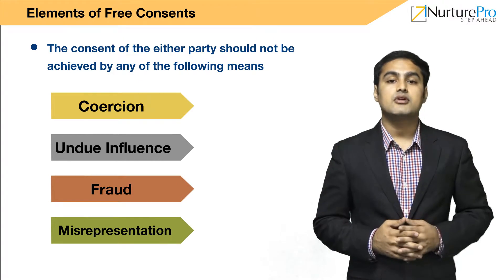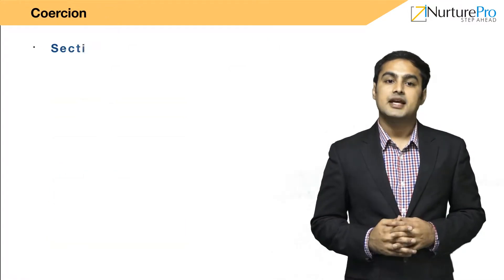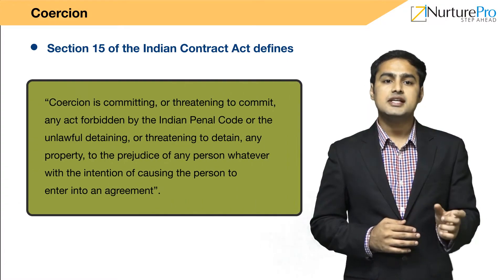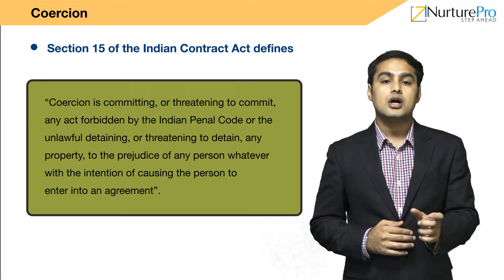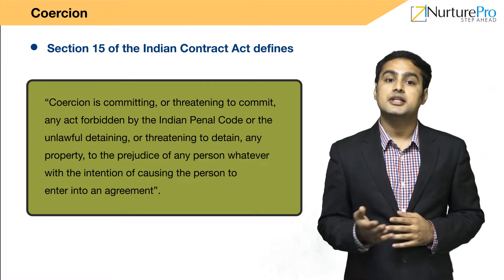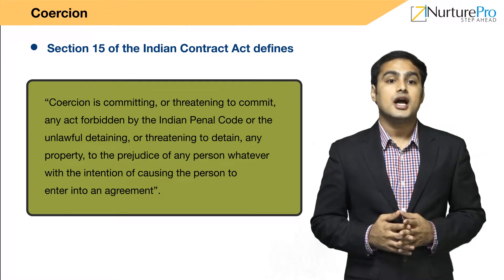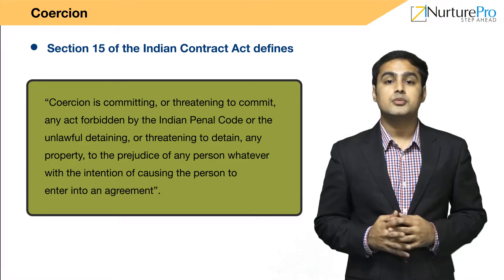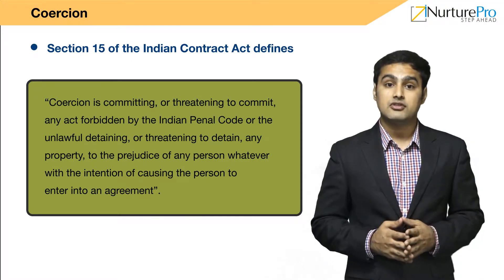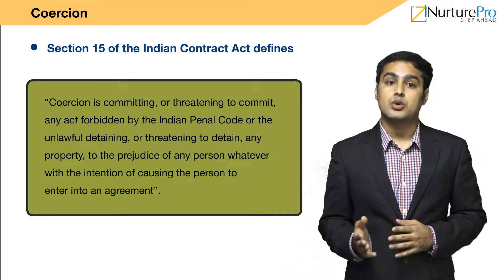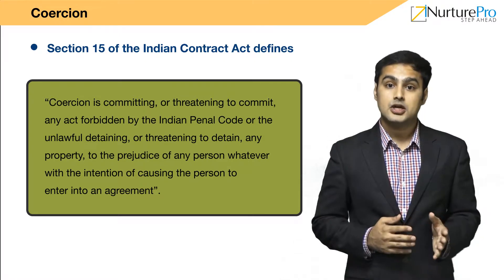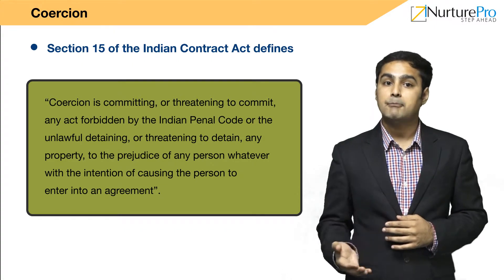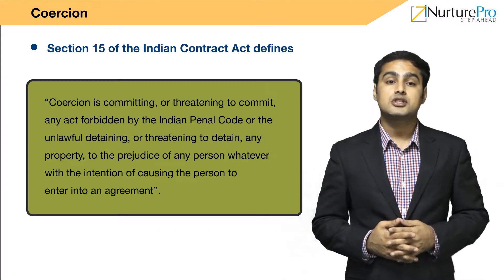Section 15 of the Indian Contract Act defines coercion as committing or threatening to commit any act forbidden by the Indian Penal Code, or the unlawful detaining or threatening to detain any property, to the prejudice of any person, with the intention of causing the person to enter into an agreement. Thus, coercion can be referred to as committing an act with a purpose to compel the other person to agree to the terms of a contract.